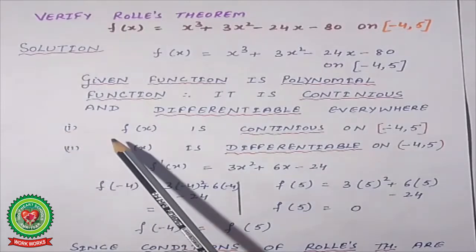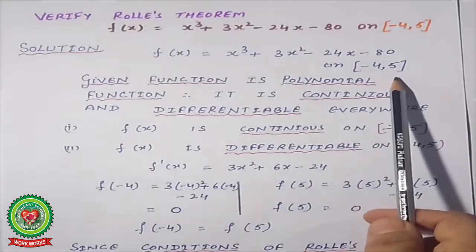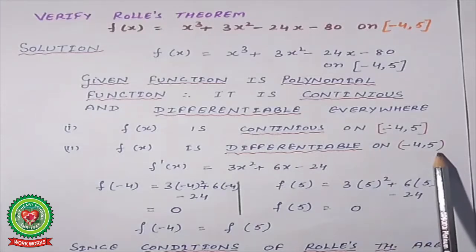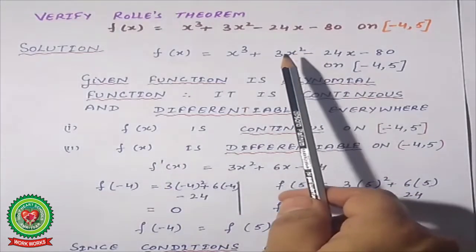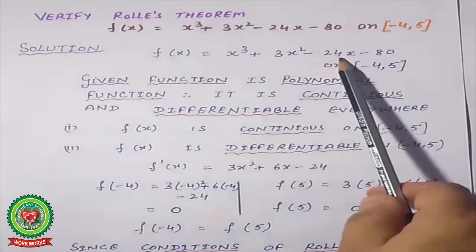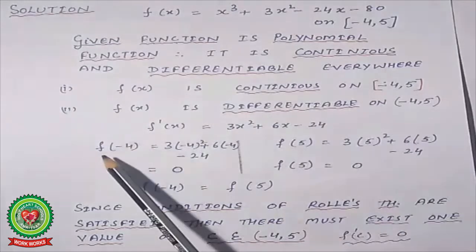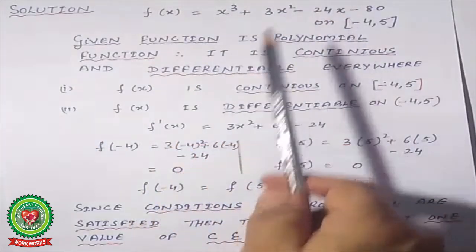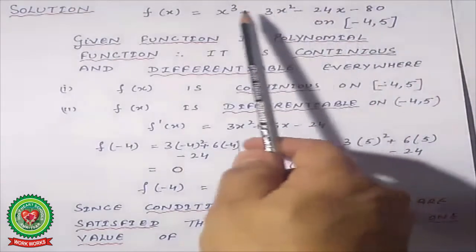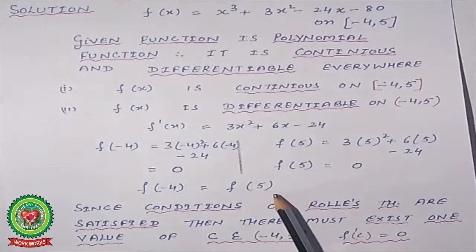Therefore, first condition: f(x) is continuous on the closed interval. Second condition: f(x) is differentiable on the open interval (−4, 5). Now find the differentiation: derivative of x³ + 3x² − 24x − 80 is 3x² + 6x − 24. Substituting x = −4 gives 0, and substituting x = 5 also gives 0. Both answers are the same, so the third condition is also satisfied.